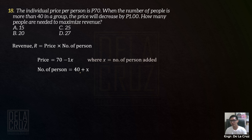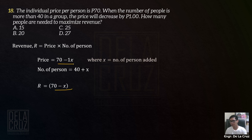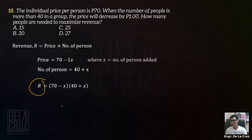Habang lumalaki yung number of person, lumiliit naman yung price natin. So pag isubstitute natin yan dito, yung R equal to 70 minus X — this one — times number of person 40 plus X. We want to maximize the revenue. Differentiate with respect to the other variable, so dR over dX.